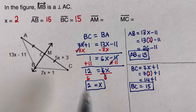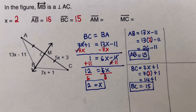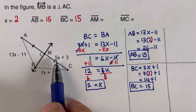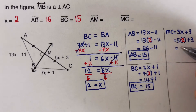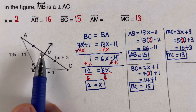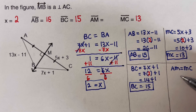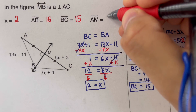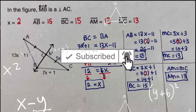To find AM and MC, we plug x = 2 into the expression for MC: MC = 5(2) + 3 = 13. Since AM = MC by the perpendicular bisector theorem, AM is also 13. That's it! If you find this video helpful, hit like and subscribe for more math videos.